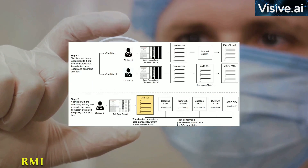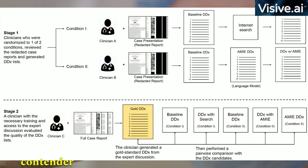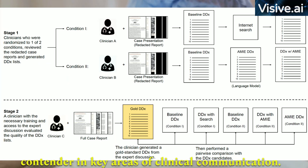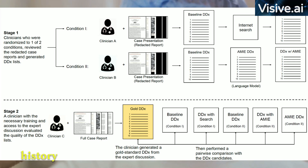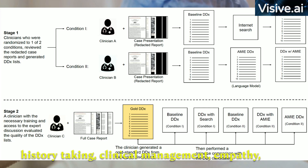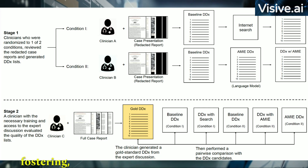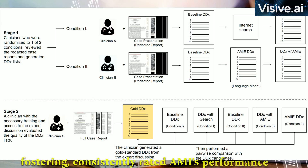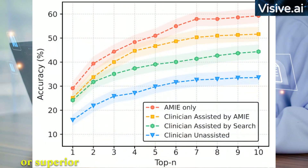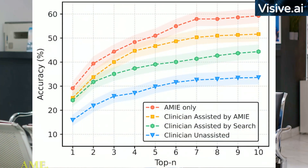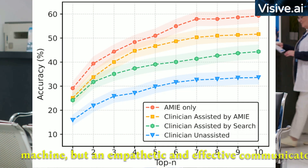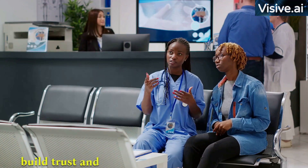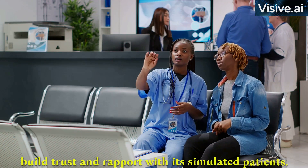AMIE also proved to be a formidable contender in key areas of clinical communication. Performance evaluations across multiple axes — such as history taking, clinical management, empathy, and relationship fostering — consistently rated AMIE's performance as equal or superior to that of human clinicians. AMIE was not just a cold, calculating machine, but an empathetic and effective communicator, able to build trust and rapport with its simulated patients.